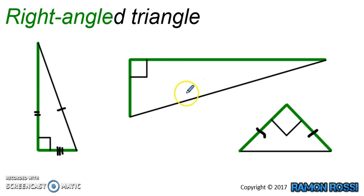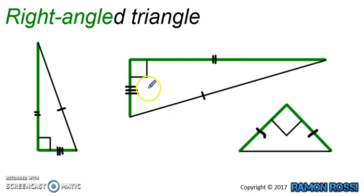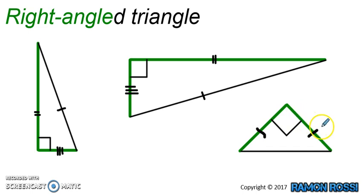This one is similar because it is also scalene: this side is the longest, this one is a little bit shorter, and this one is the shortest. So it's scalene because all the sides are different, but it's also a right-angled triangle because it has a right angle in the corner — like an upside-down L shape. This next one is a right-angled triangle but it's also an isosceles triangle, because it has two identical marks meaning those two sides are the same.